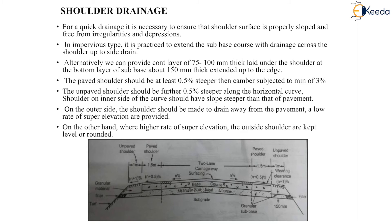The paved shoulder should be at least 0.5 percent steeper than the camber, subjected to a minimum of 3 percent. The camber of the shoulder is always 0.5 percent steeper than the camber of the pavement surface. The unpaved shoulder should be a further 0.5 percent steeper along the horizontal curve. The shoulder on the inner side of the curve should have a slope steeper than that of the pavement. On the outer side, the shoulder should be made to drain away from the pavement where a low rate of super elevation is provided.